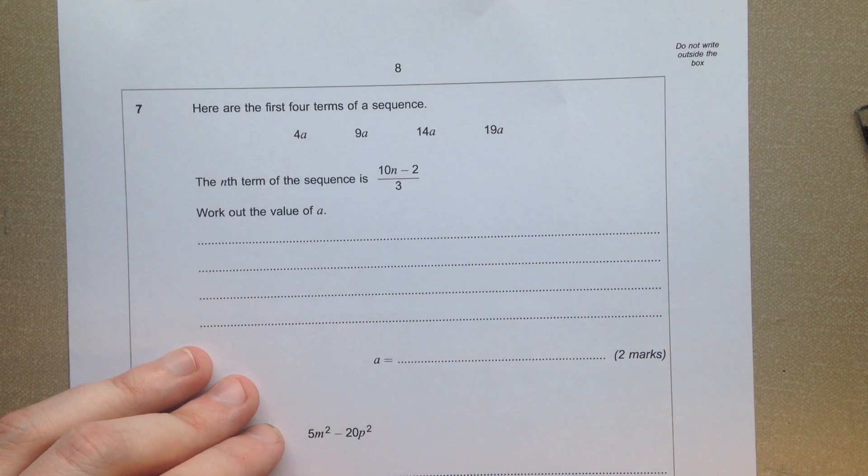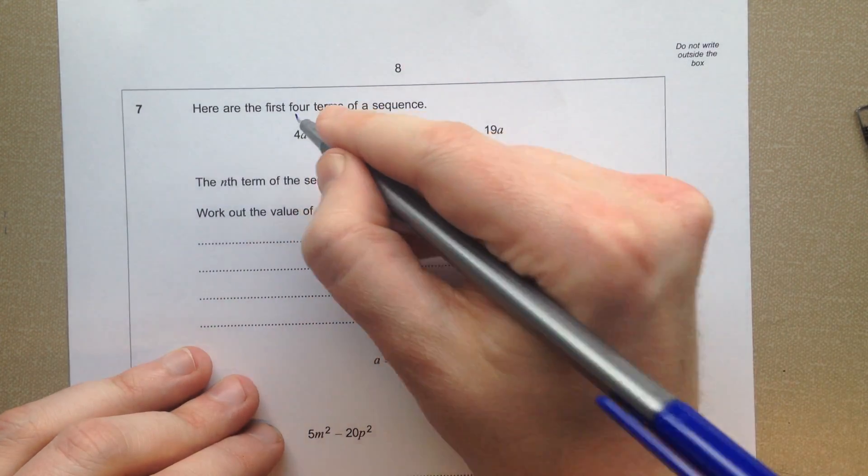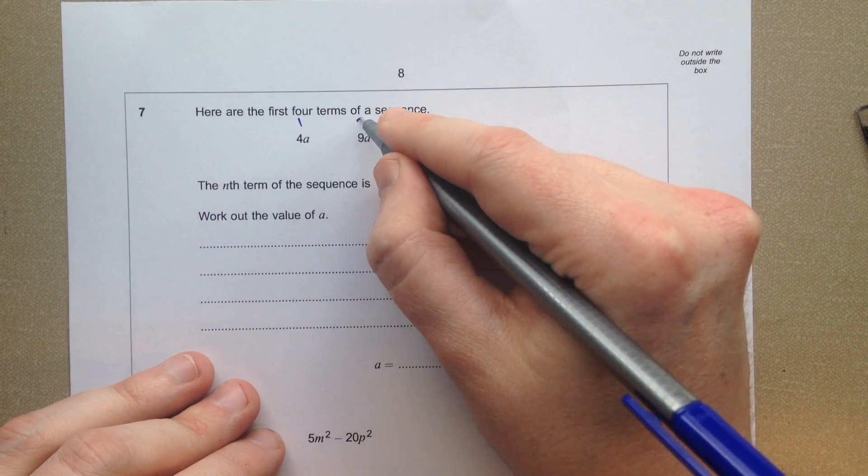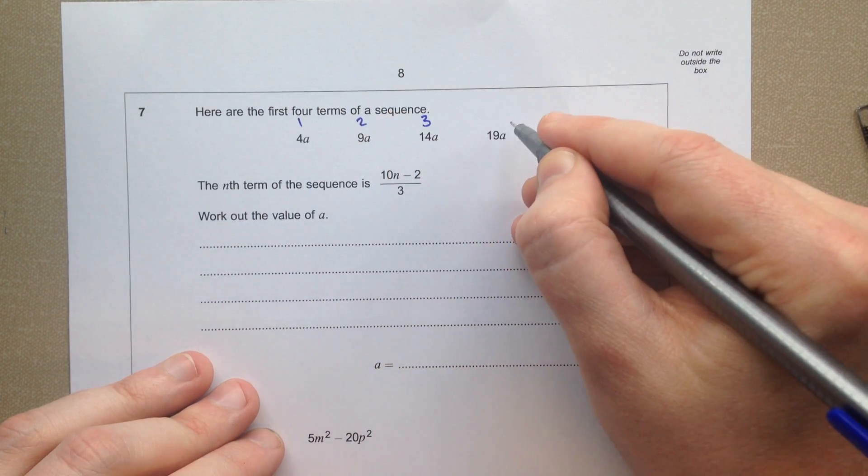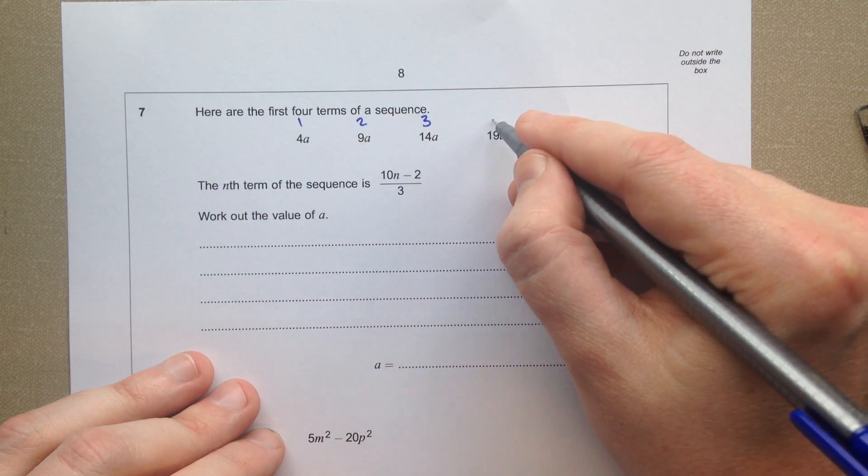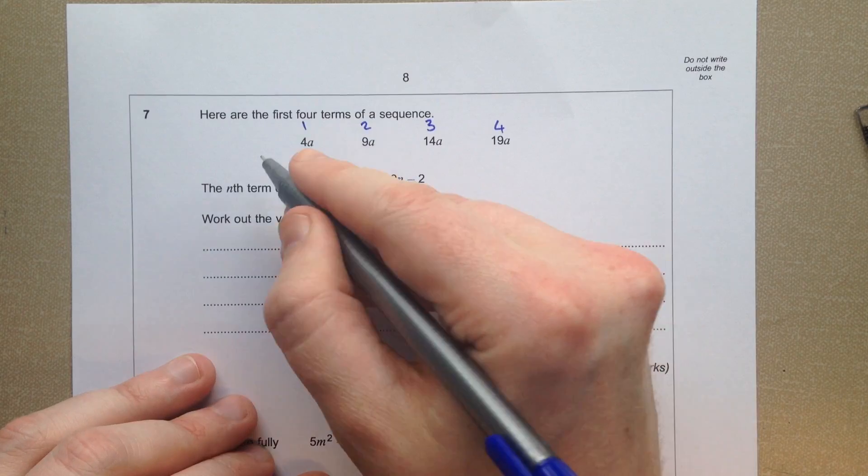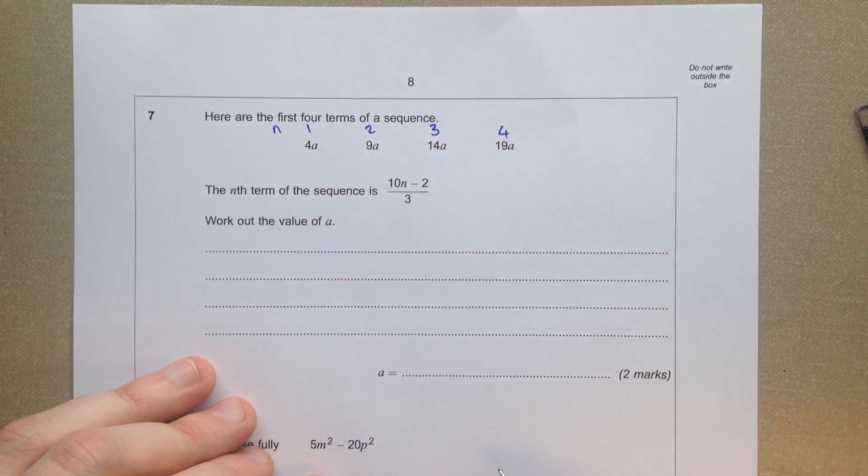OK, remember the nth term of a sequence lets us get from the position to the term. So if we take this number and plug this in as our value of n, this will get us down to here.